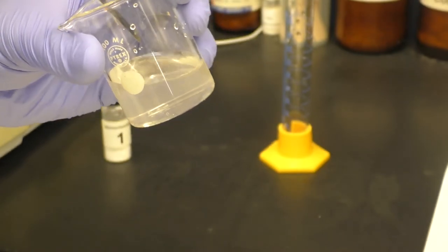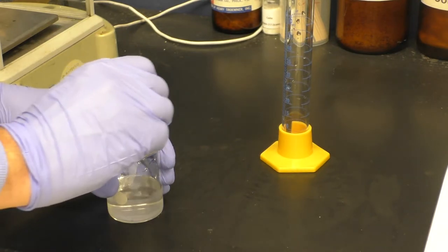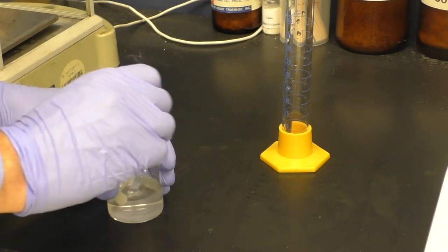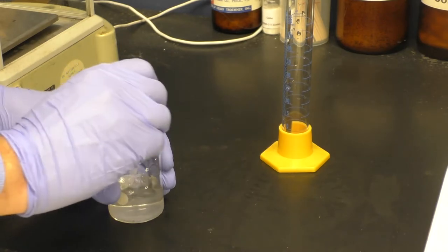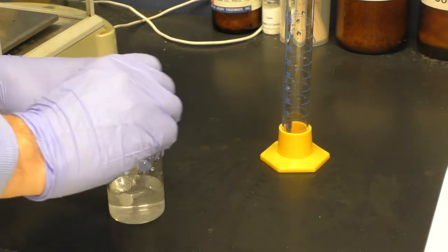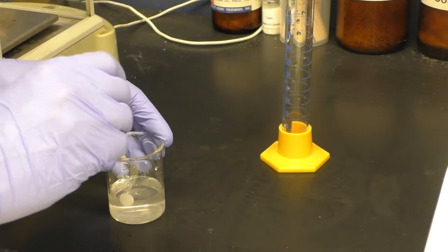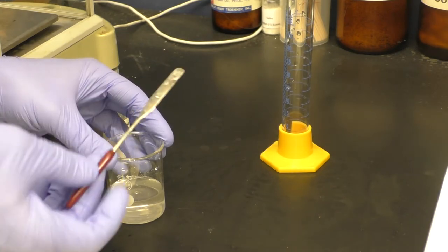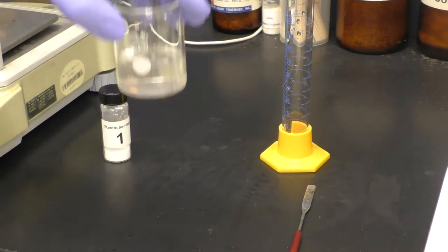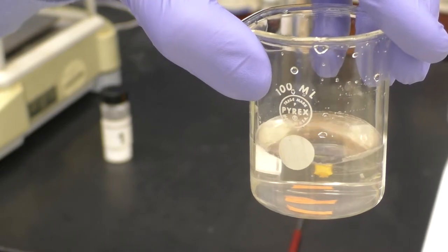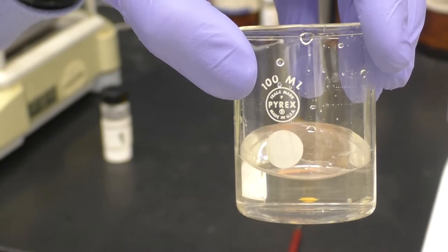We want to continue to mix until the solution is fully homogeneous and all these little chunks of material have fully dissolved. This is now sufficiently homogeneous to take to the polarimetry cell.